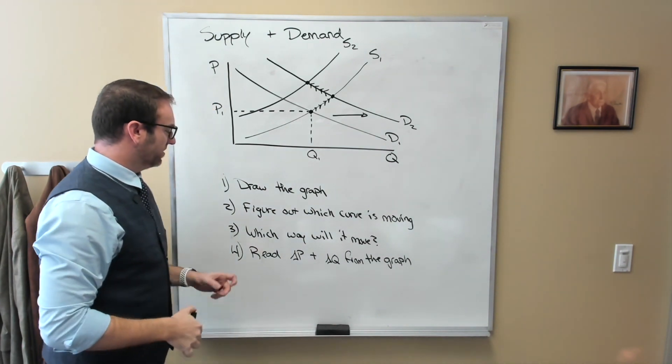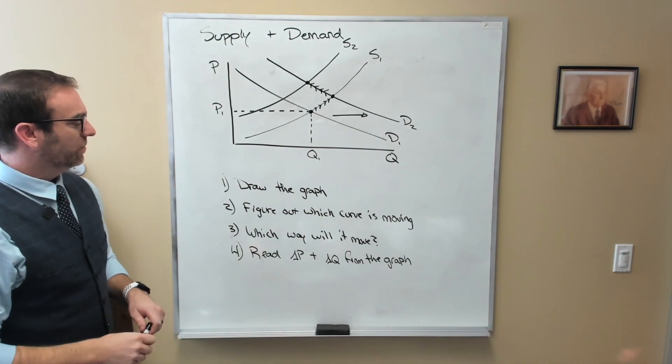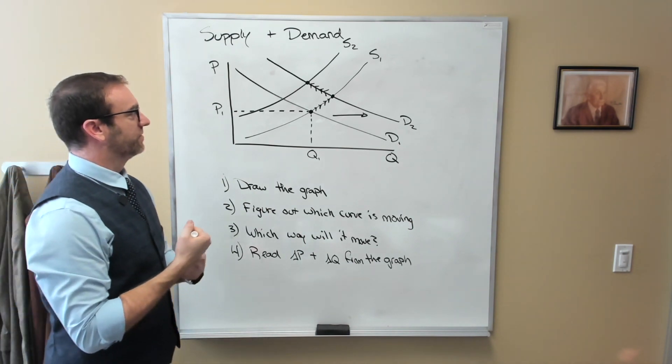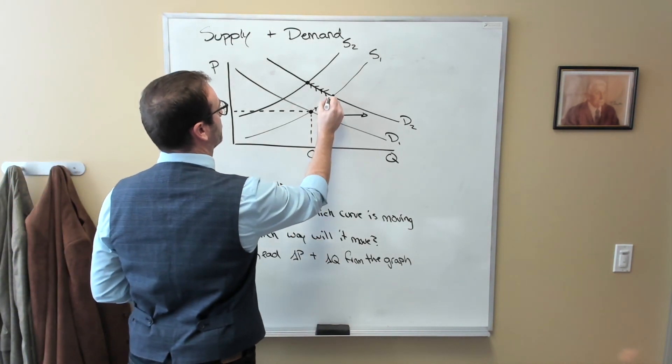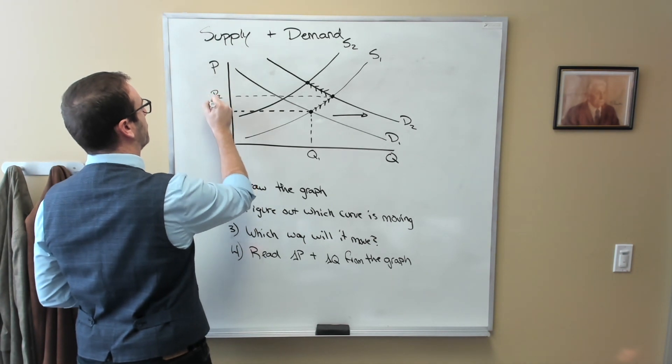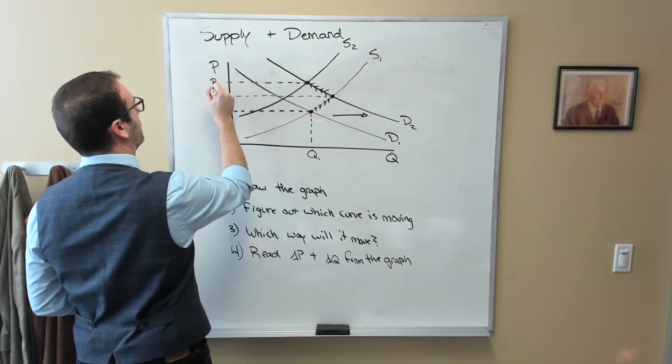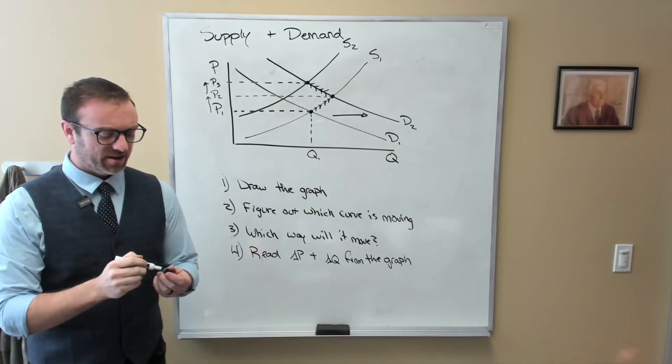So let's think about this. How can we read changes in price and changes in quantity from the graph? Well, it should be fairly straightforward that price is going to go up.